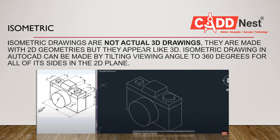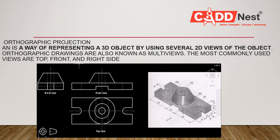Isometric projection drawings are not actual 3D drawings, but they are made up of 2D geometrics that appear like 3D. An isometric drawing in AutoCAD can be made by tilting the angle and working in a 2D plane to represent 3D images.